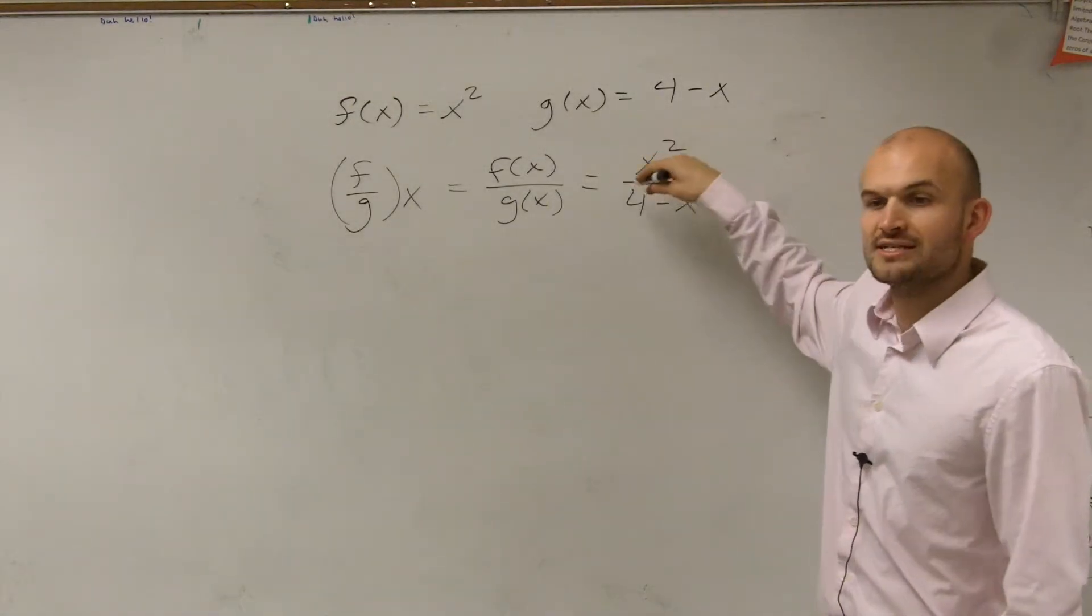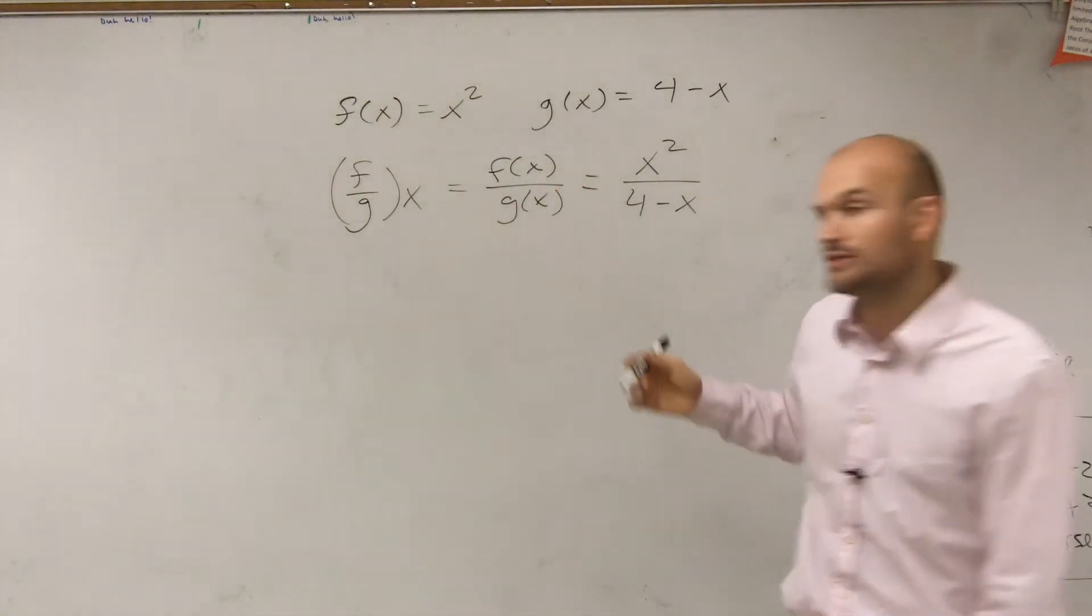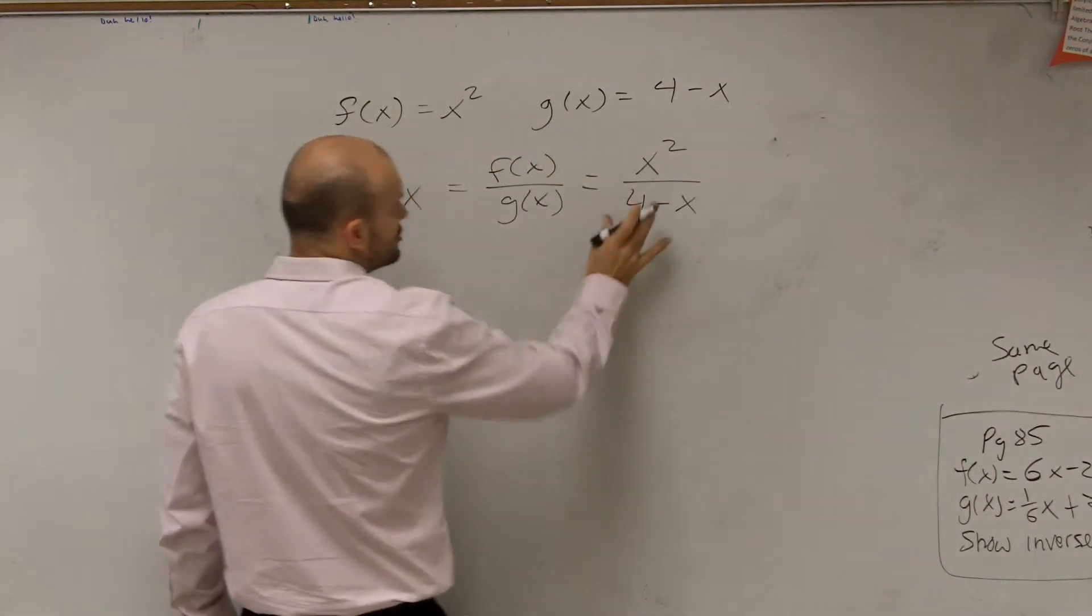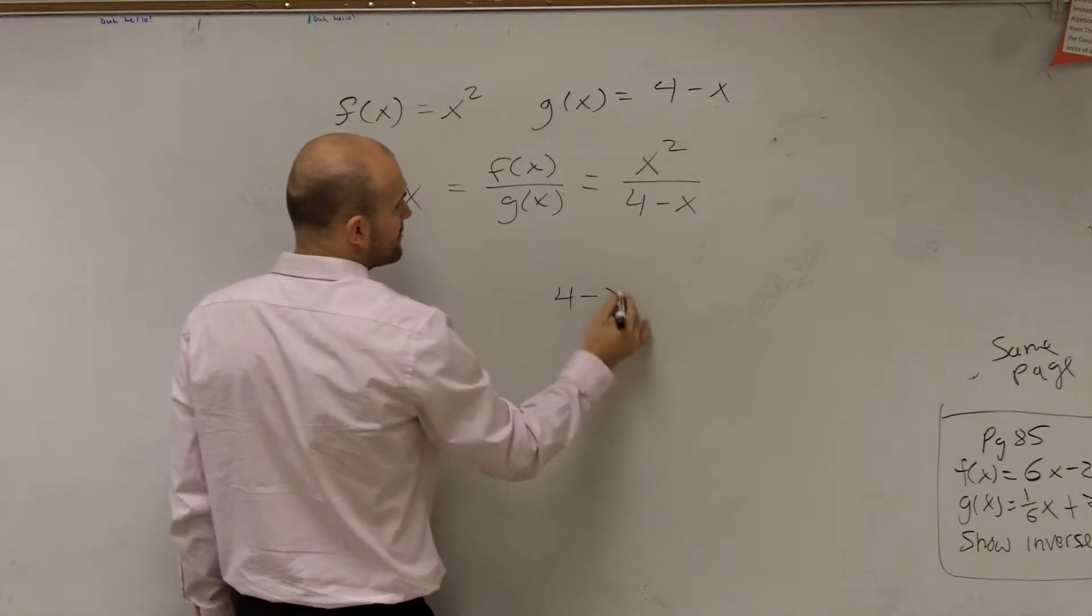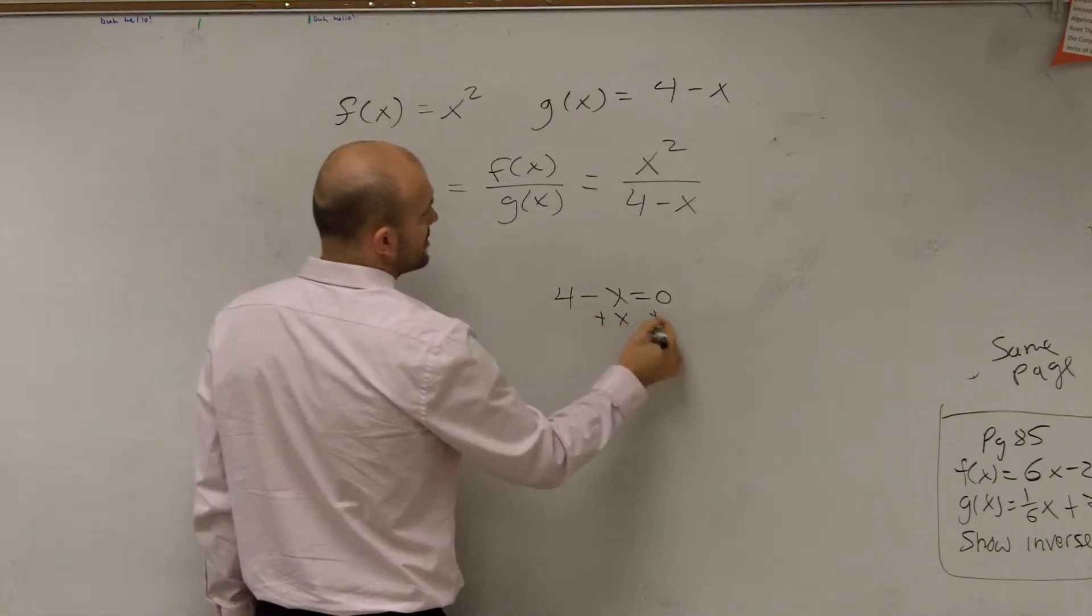We know that our denominator cannot be zero. So when you have a rational function or equation, you set your denominator equal to zero and say, okay, for what x is this going to be zero?